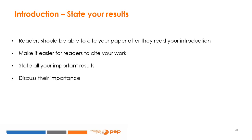To state your results, think about the answer to the following question: what exactly did you learn from this research? The answer is important because readers should be able to cite your paper after they read your introduction. Therefore, make it easier for readers to cite your work — state all your important results and discuss their importance. Most published research papers dedicate a substantial portion of their introduction to the results or findings, often three to five paragraphs, or between 25 and 30 percent of the entire introduction.